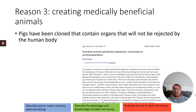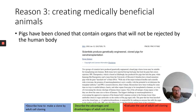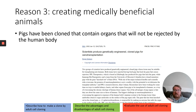The third reason is that it allows us to create medically beneficial animals. For example, pigs have been cloned that contain organs that will not be rejected by the human body. Getting organs from pigs has been used for a long time, but our immune system would reject some of these organs. Creating cloned pigs whose organs can't be rejected would be a massive step forward in the field known as xenotransplantation.